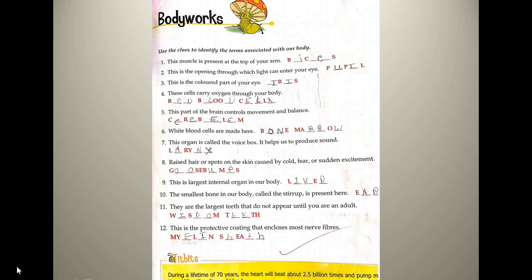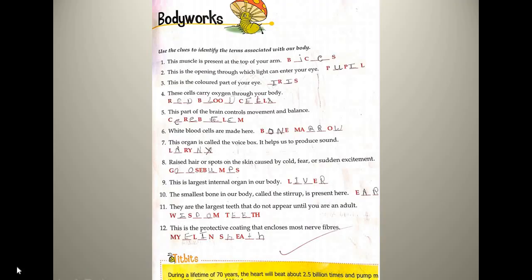The next question: raised spots on the skin caused by cold, fear or sudden excitement. Whenever you are in fear, it is very cold, or you are very excited, you get goose bumps. G-O-O-S-E-B-U-M-P-S. Your hairs are very much erect and standing, and like this you get goose bumps whenever you are very much excited, in fear, or feel very cold.